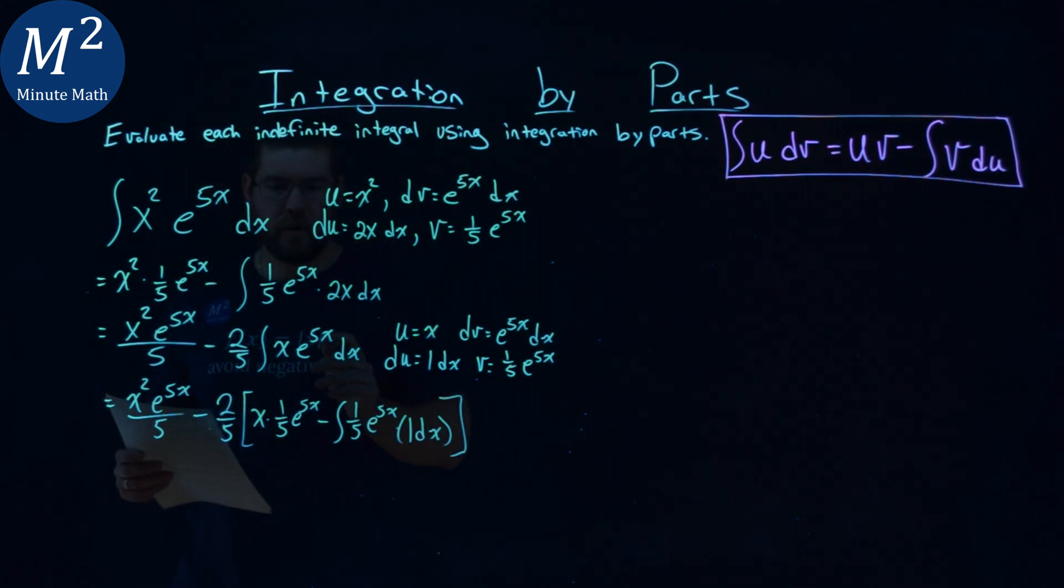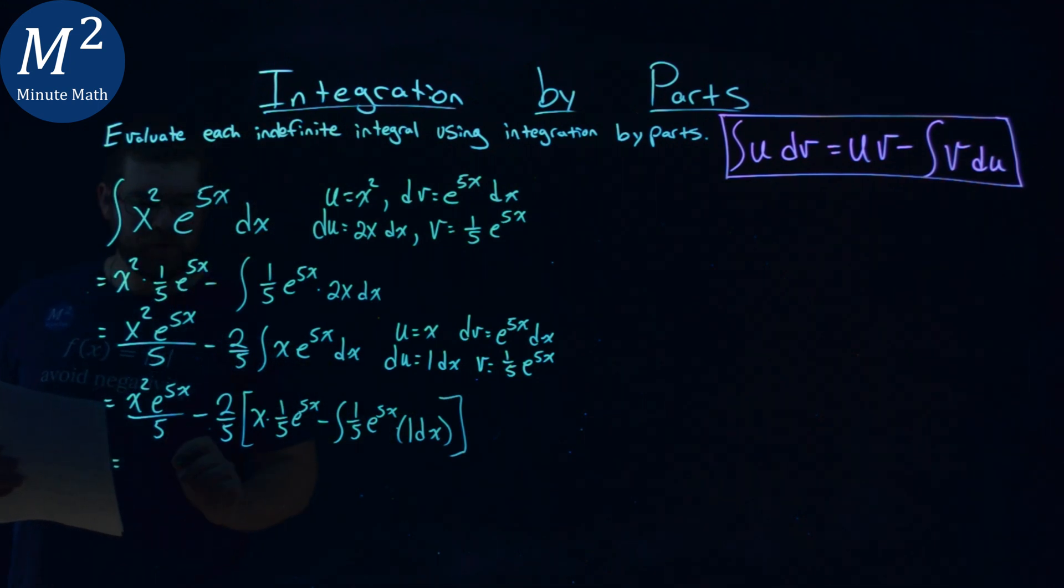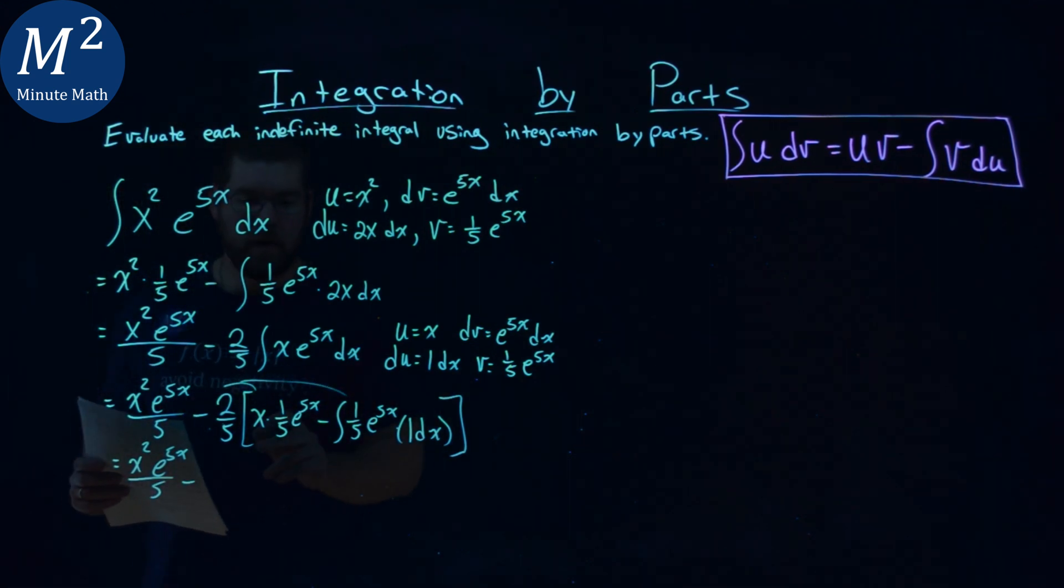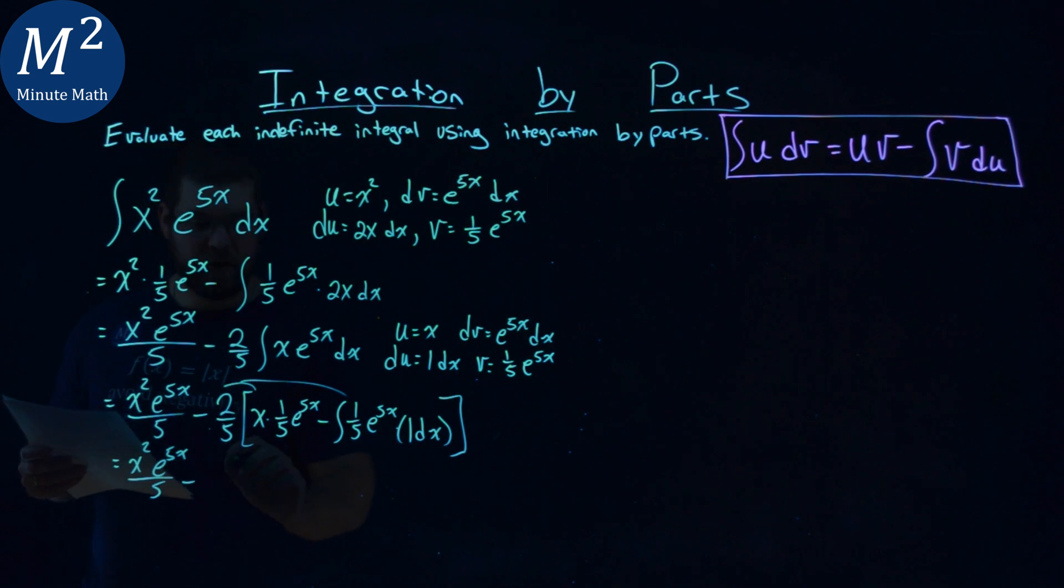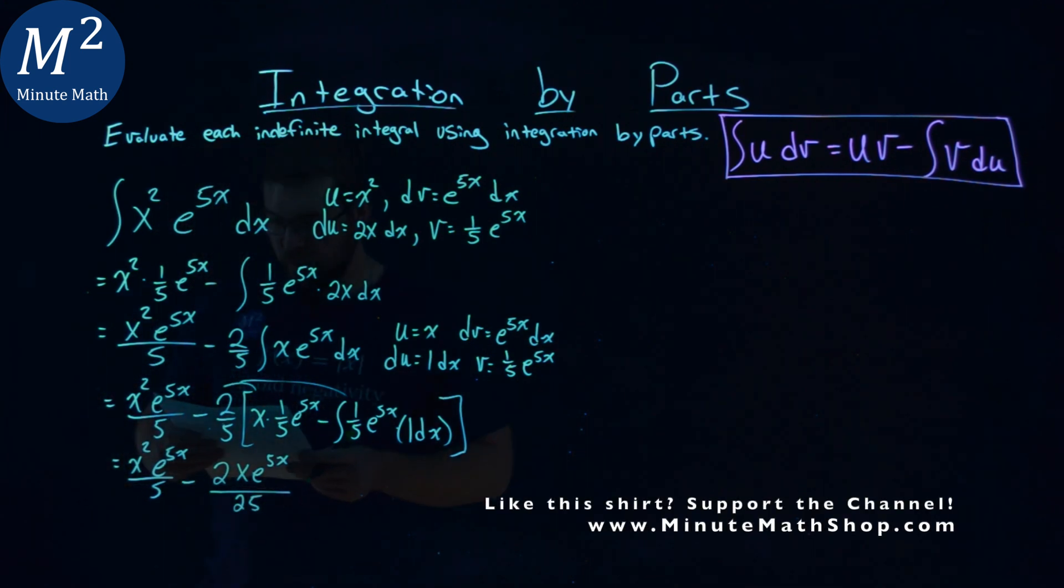Let's simplify this again. We have x squared times e to the 5x over 5, minus - let's distribute this out. Two-fifths times one-fifth gives me 2 over 25. So, 2 in the numerator, we have x e to the 5x over 25, and we're good.